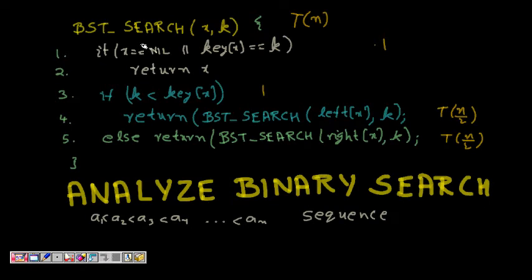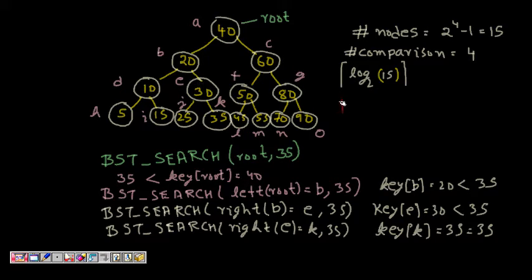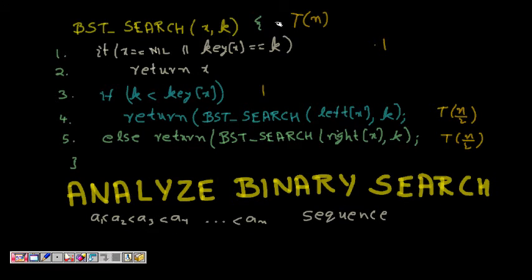A binary search tree has the property that the key of the left child is less than the key of the parent, and the key of the right child is greater than the key of the parent — assuming all numbers are distinct. So all elements in the left subtree are less than the node and all in the right subtree are greater. This is the BST-Search(X, K) function, where X is a node and K is the key we are searching.